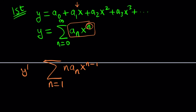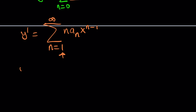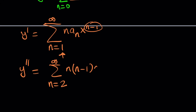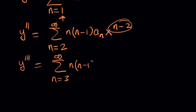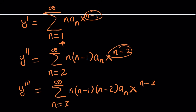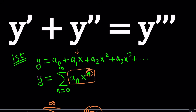So y prime starts at n equals 1 to infinity — don't forget to move the index up. Now for y double prime, we differentiate again. It starts at n equals 2, because we lose another term. It becomes n times (n minus 1) times aₙ times x to the power n minus 2. Every time you differentiate, you lose a power, which is normal. Finally, the third derivative starts at n equals 3 to infinity and is n(n−1)(n−2) aₙ x to the power n minus 3. Now we have all the ingredients.